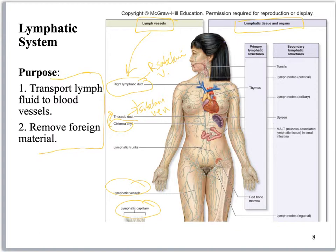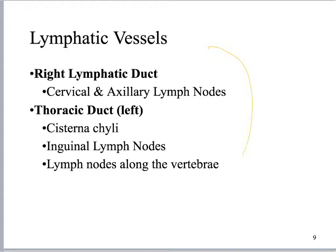Primary lymphoid organs are places where you actually produce and train cells — red bone marrow is one and the thymus is another. Secondary lymphoid organs are where you aren't necessarily making cells; instead, cells that have already become immunocompetent or are part of the innate immune function hang out and do their jobs. The tonsils, lymph nodes, spleen, and MALT tissue are all considered secondary lymphoid organs.